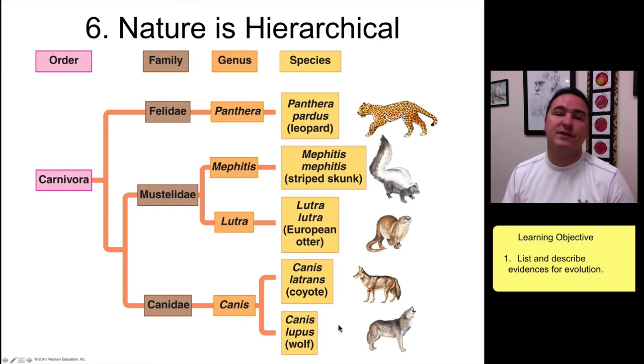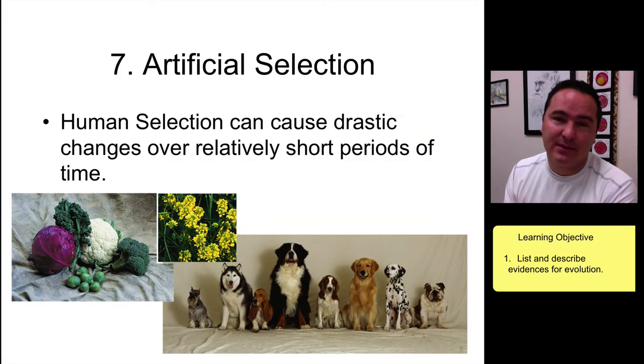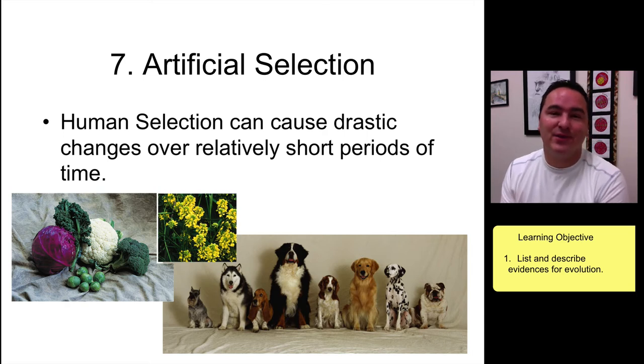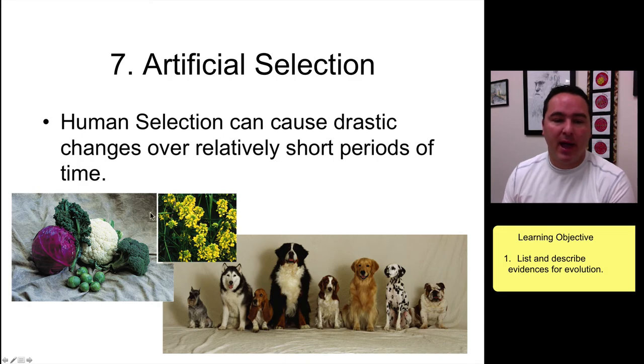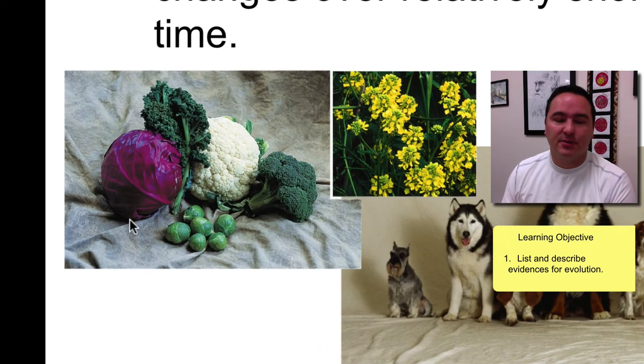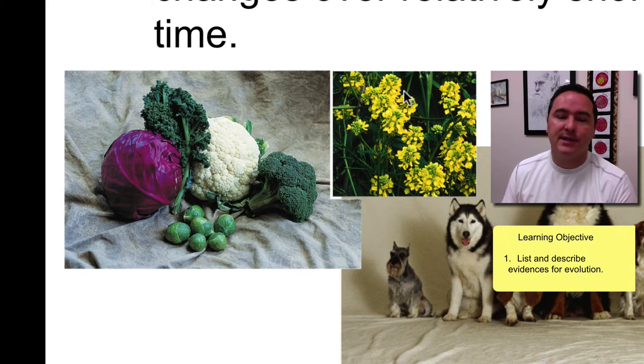Number seven: artificial selection. I really like this one, and this was also a favorite of Charles Darwin. He looked at lots of different organisms that humans were actively making decisions on which varieties and breeds were going to reproduce. For example, back in his day, these types of vegetables were just finished being bred in a sense. Broccoli, cauliflower, cabbage, kale, and brussels sprouts all come from an ancestor that's essentially like this.